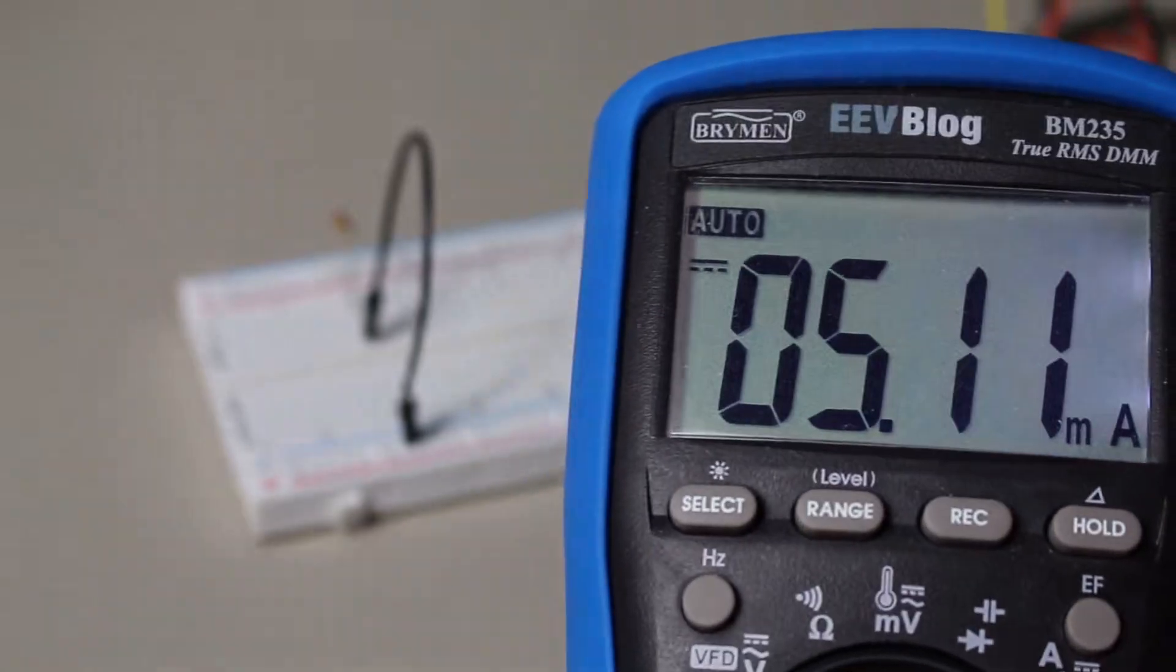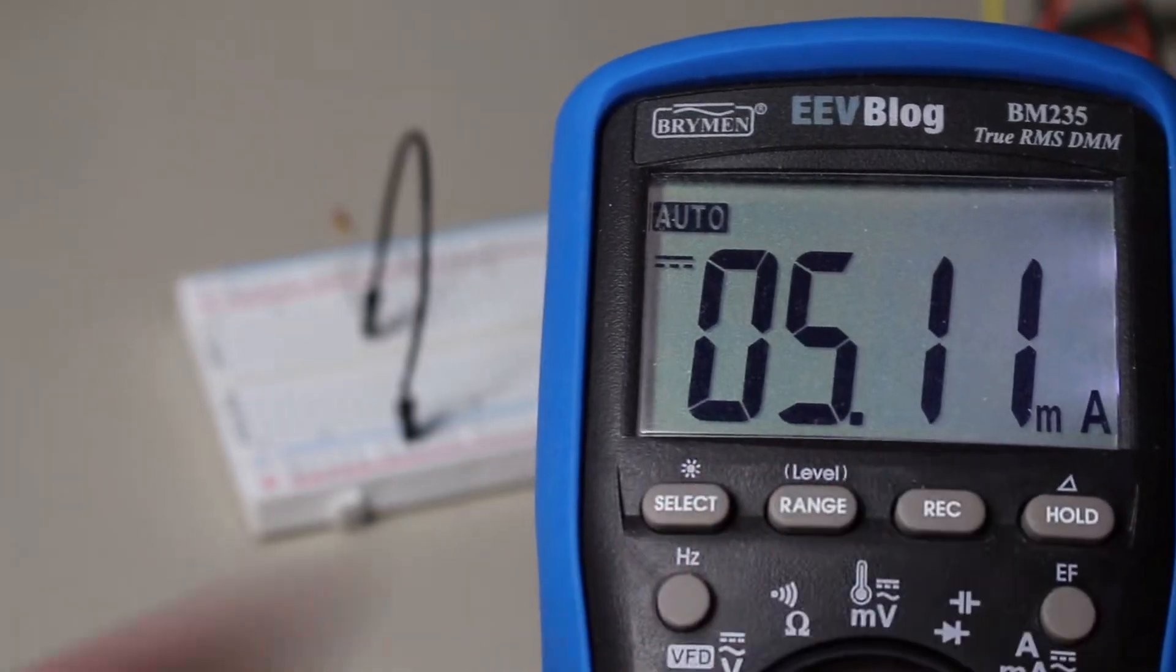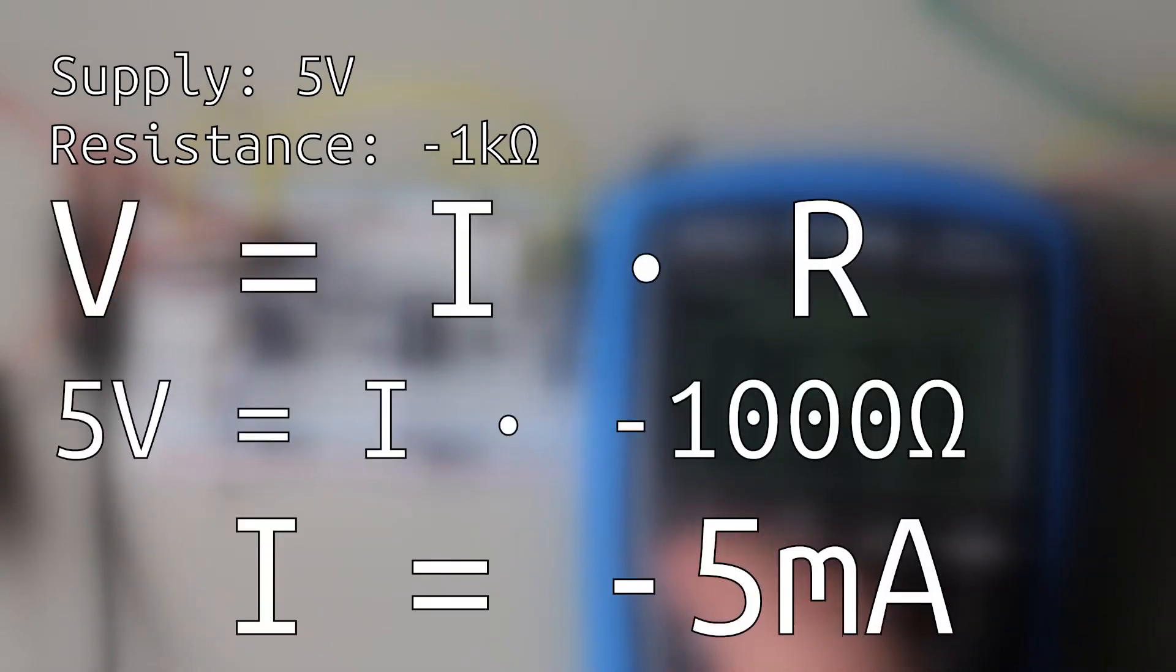Let's now imagine a component that somehow has a resistance of negative 1 kilo-ohm, and we will use the same power supply. Since the supply is locked in at its 5 volt drop, we can only change the current. Let's plug it into Ohm's law. And we should be getting a negative 5 milliamps.